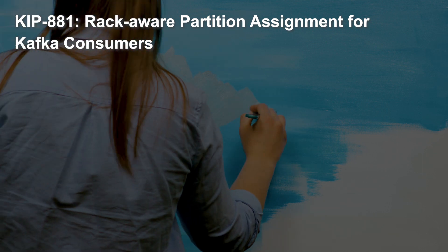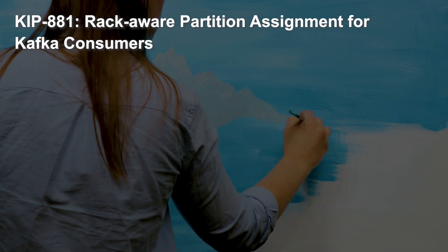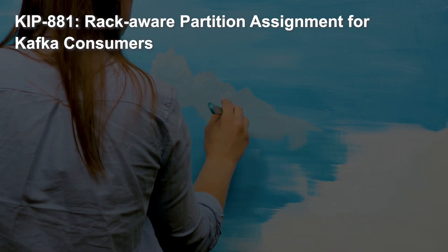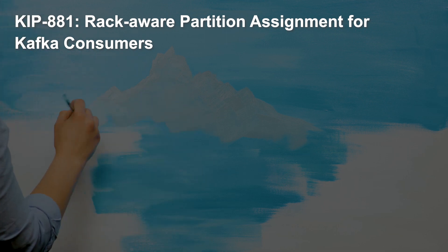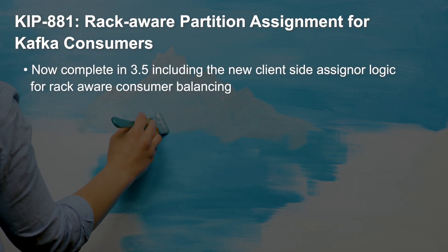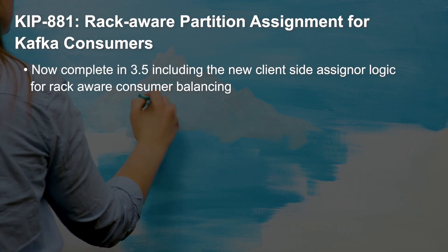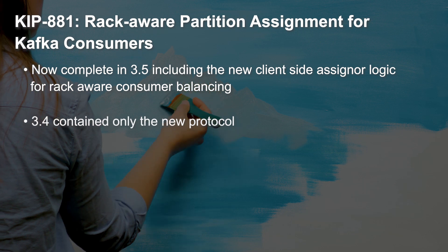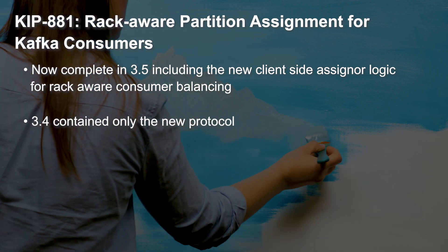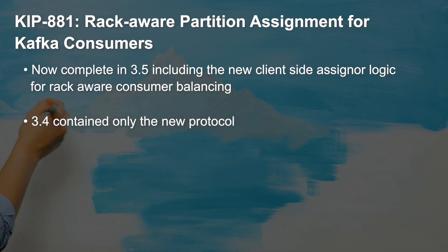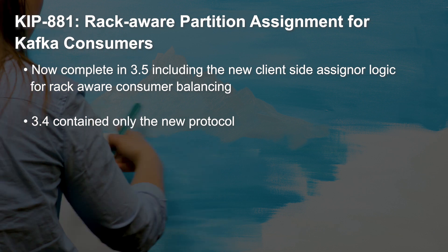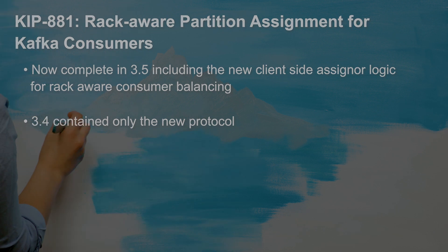KIP 881 is meant to be a bridge between existing client protocols and the new consumer group protocol as outlined by KIP 848. So in this release, you'll see new client-side assigner logic for rack-aware consumer balancing. Check out the release notes for more details.